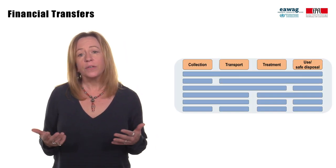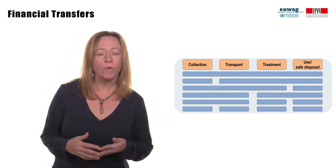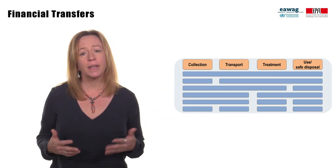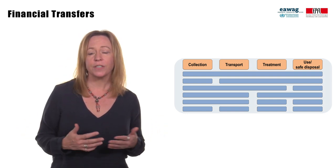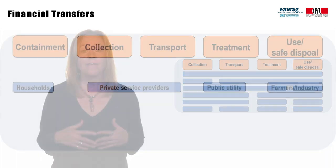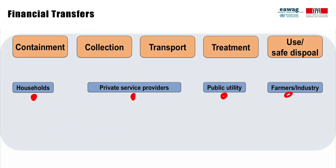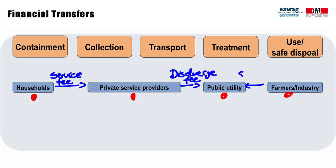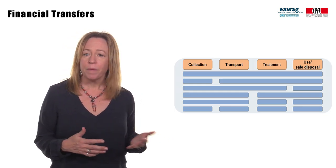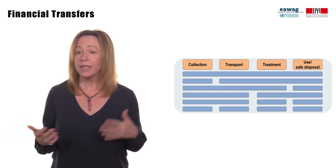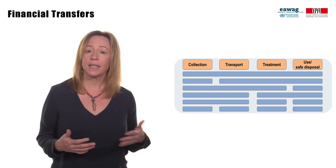Considering different models of financial transfers will help to formalize the sector and make it financially sustainable, and could include incentives as a method of transition to new management models in the short term. Financial transfers include capital and operations and maintenance costs, from the household level to collection and transport service providers to treatment plants and resource recovery. These are a combination of public and private parties, payments for service or discharge fees, taxes, tariffs, and licenses.